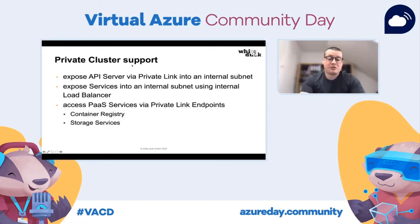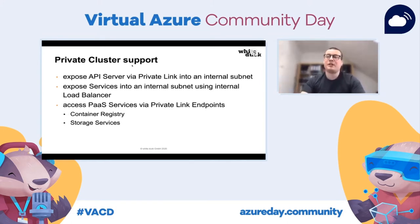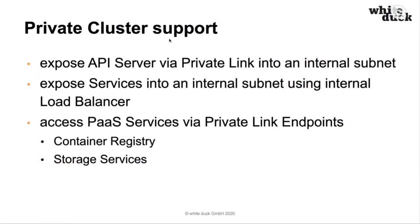There's also the option to use a private cluster. Normally your Kubernetes API endpoint is exposed on a public IP, but using the private link feature you can expose this API endpoint into an internal subnet instead. Similarly, when you expose services, normally you get a public IP load balancer, but you can also use an internal load balancer mapped to one of your subnets. The cluster can be configured to be totally private. The same applies to other platform services — for example, you can put Azure Container Registry privately within the same subnet as your Kubernetes cluster, and also with Azure Files, SQL, Cosmos DB, or any other storage services.